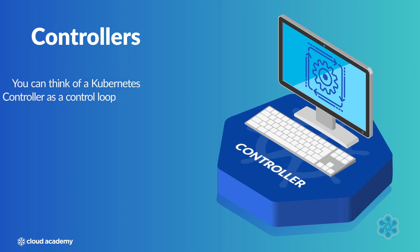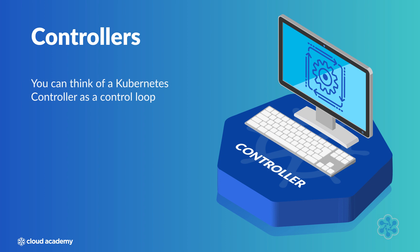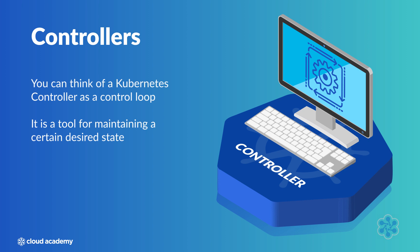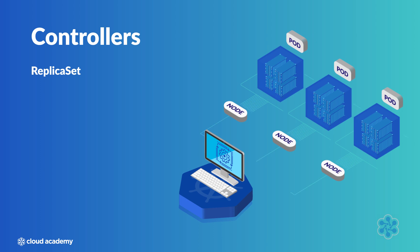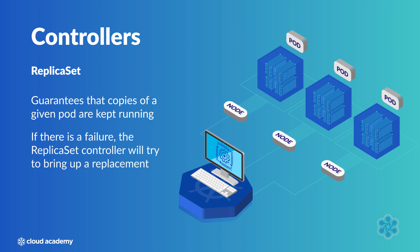Let's start with controllers. You can think of Kubernetes controllers as a control loop — a basic CS concept and a tool for maintaining a certain desired state. In Kubernetes, this refers to an API that manages a pod or set of pods by preserving a preset configuration. There are a few different types of controllers. One of the most basic is the replica set, which simply guarantees that a certain number of copies of a given pod are kept running. For example, if we have our stateless Python app running as three pods across the nodes in our cluster and they are running as a replica set, then Kubernetes will make sure those three pods are always running. If there's a failure, a crash, or an error that causes a pod to die, the replica set controller will try to bring up a replacement.